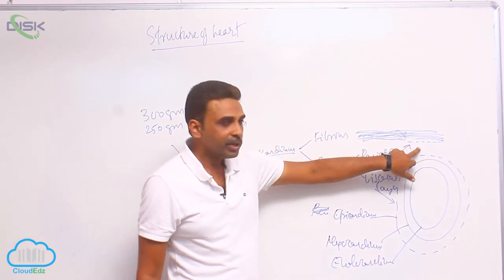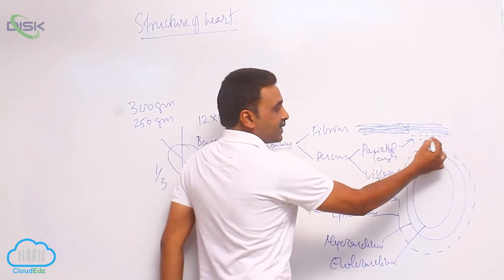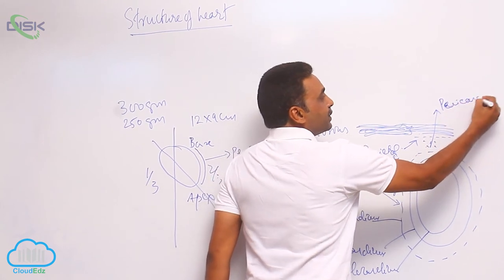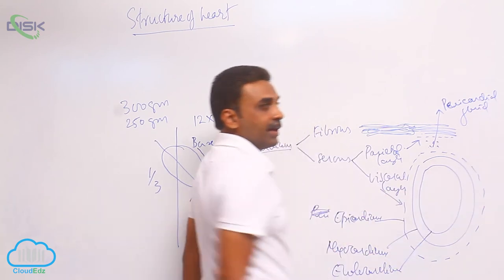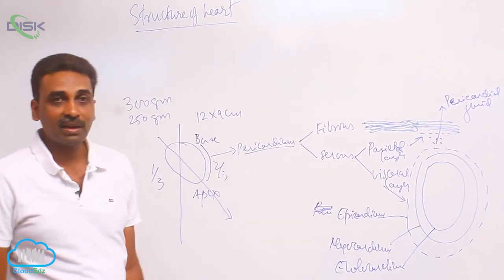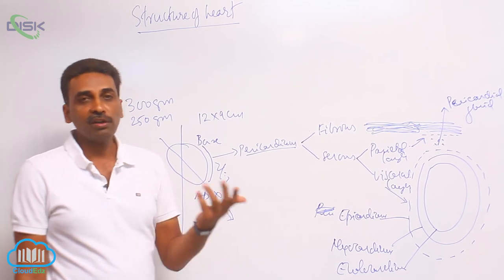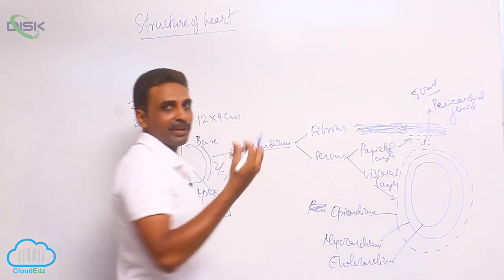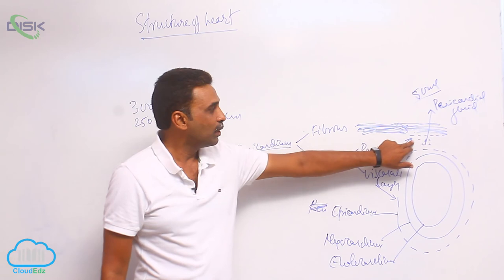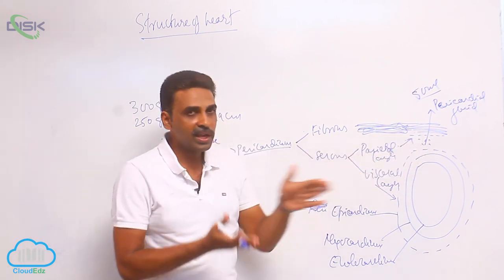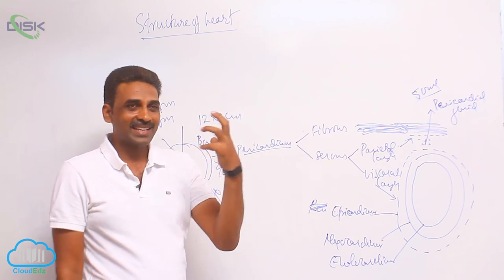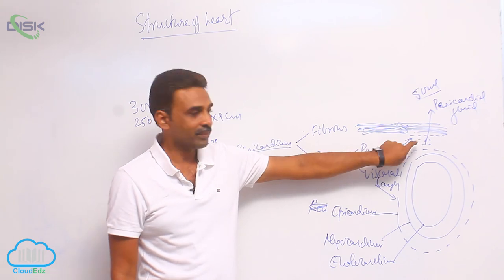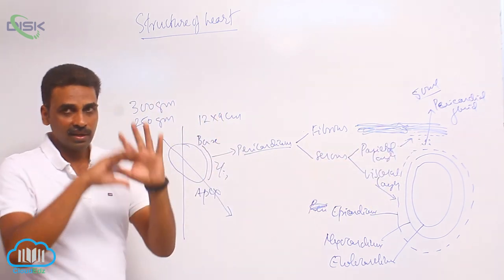There is a gap between the parietal and visceral layers, and that gap is filled with pericardial fluid. Only a very small quantity — just about 50 ml — is present. It provides lubrication between the two layers and also absorbs external shock. So that is the covering of the heart.